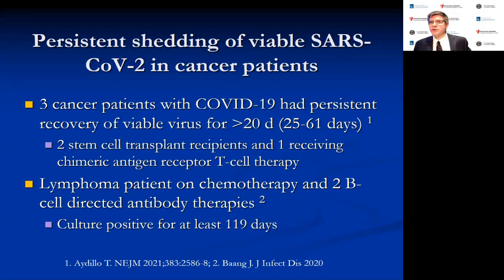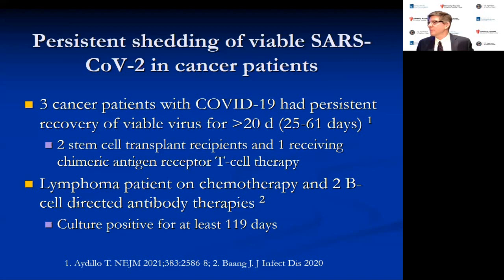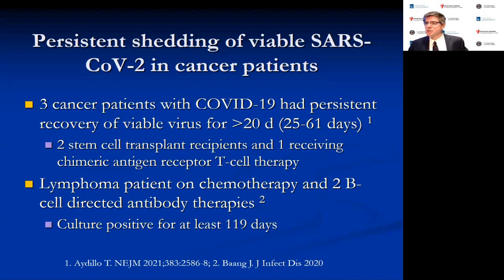The CDC currently recommends that non-immunocompromised individuals can come out of isolation after 10 days and are considered at low risk to transmit at that point. If immunocompromised, isolation is recommended for 20 days. However, recent studies have demonstrated persistent shedding of viable SARS-CoV-2 in cancer patients well beyond 20 days — from 25 to 61 days in one study, and a lymphoma patient on B-cell-directed antibody therapies was culture-positive for 119 days. At the VA, infectious diseases consults on immunocompromised patients to consider whether they need a longer isolation period.